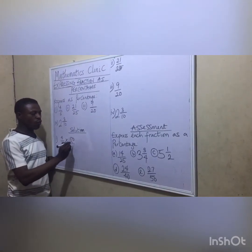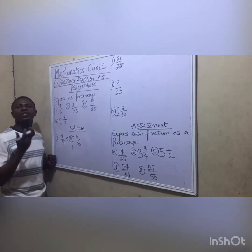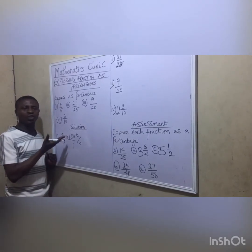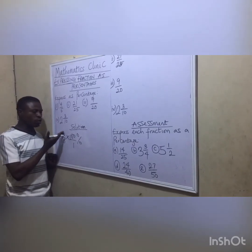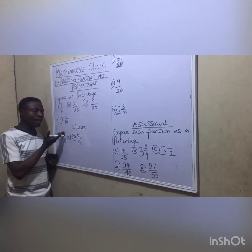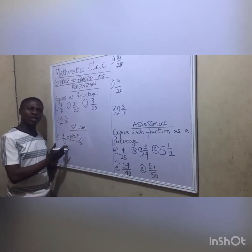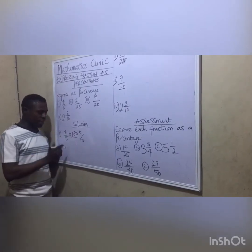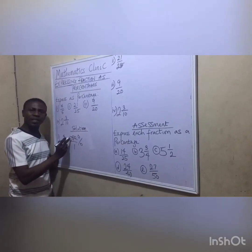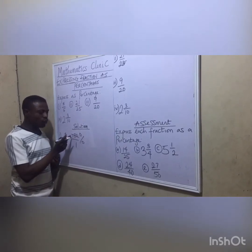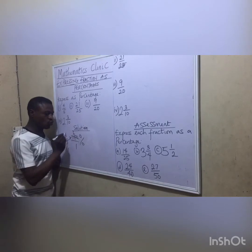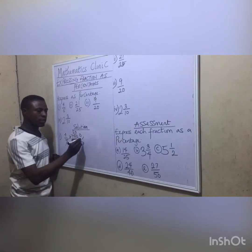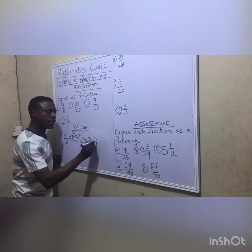We multiply it by 100 over 1 and add the % sign. Now the rule of multiplication of fractions says: don't use the same top number to cancel each other, or the same bottom number. You can only use a top number to cancel a bottom number — either directly or diagonally opposite. So, 5 goes into 100 twenty times. Then 4 times 20 gives you 80%. That is the answer.